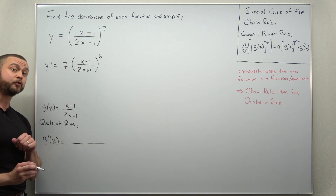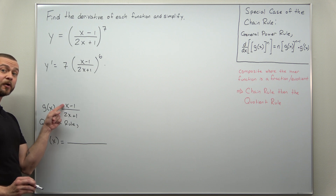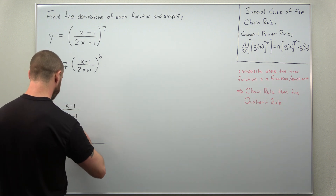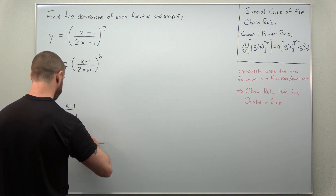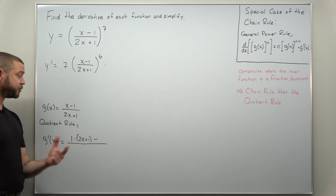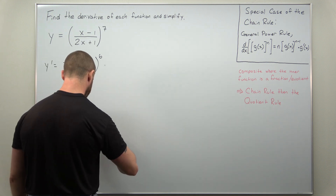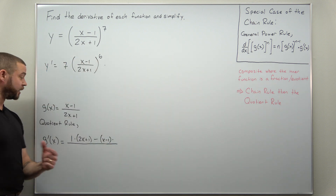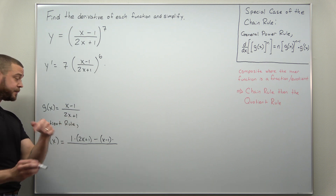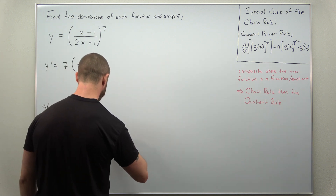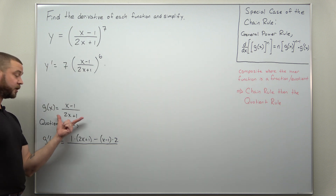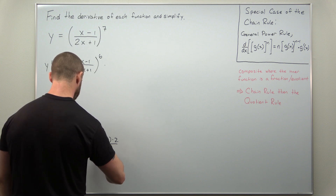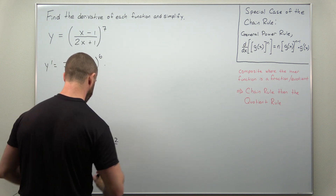The quotient rule says we take the numerator and differentiate that — the derivative of our numerator is 1 — and multiply by the denominator, 2x plus 1. Then we subtract the numerator x minus 1 multiplied by the derivative of the denominator, which works out to 2. That's all over the denominator squared: 2x plus 1 squared.